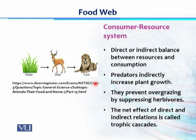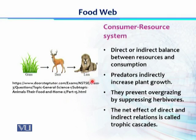The lion is feeding on the deer, so the deer population is under control. When the deer population is under control, it helps prevent over-grazing of grasses. The grasses are relatively less grazed and get the opportunity to grow and enhance their productivity, because the primary consumer's population size is reduced by the activity of the lion. So the lion is indirectly enhancing the productivity of the primary producer. Similarly, deer is directly regulated by the lion.